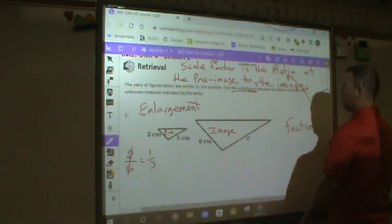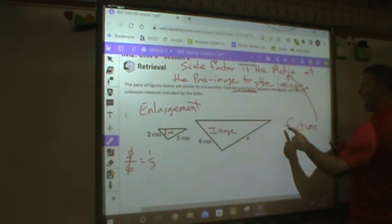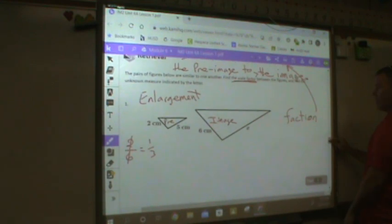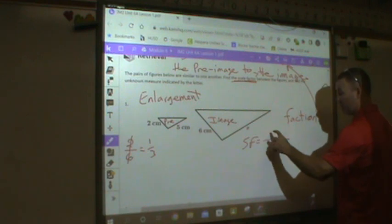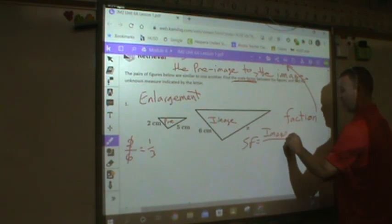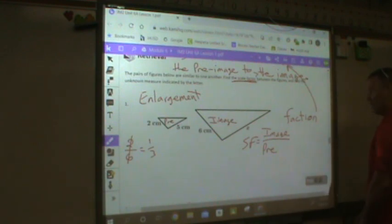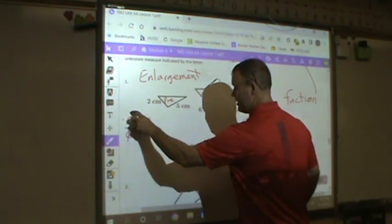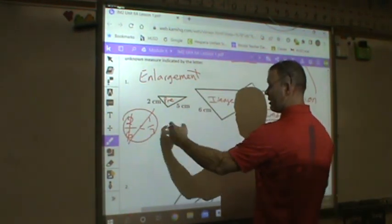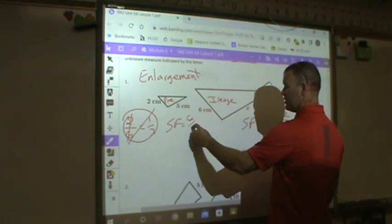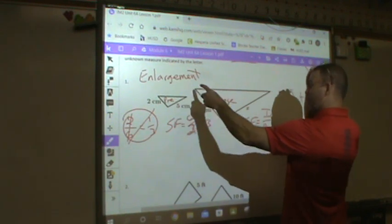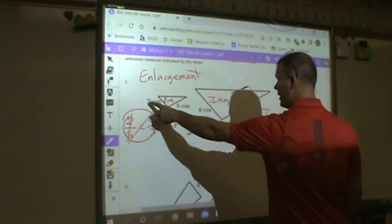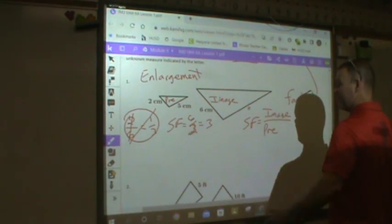Our scale factor is created by the ratio or the fraction of the image to pre-image. So how do we say that? Our scale factor is always going to be the ratio of the image over the pre-image. It's always the image over the pre-image. So it's always I over P. So in that case, this is not correct. How do we fix that? My scale factor here is going to be equivalent to 6 over 2, which is 3. The bigger figure is 3 times the size of the smaller one. What do I do to 2 to get to 6? 3. There's your scale factor. That's what I did. It's that simple.